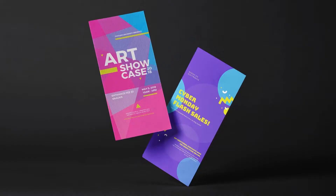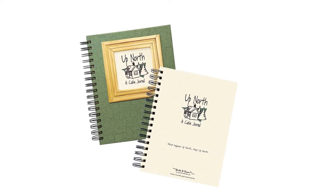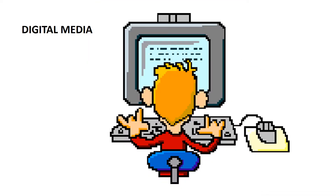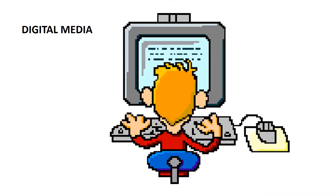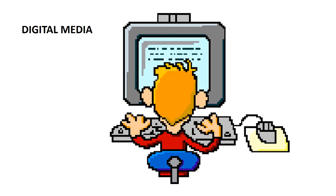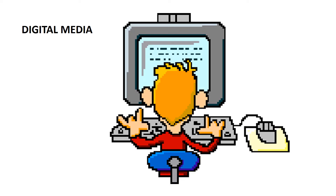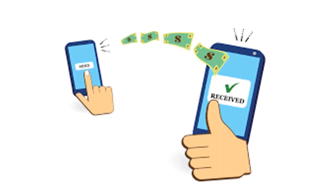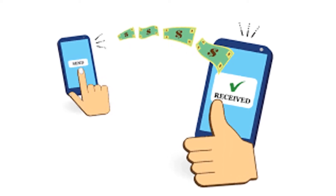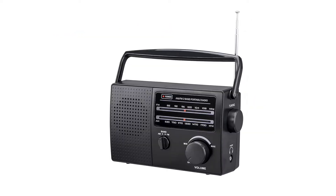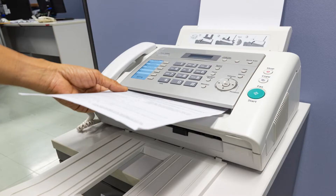books, flyers, journals, etc. Digital media is a form of communication used to spread information on digital electronic devices. It allows us to send and receive information instantly. Examples are television, radio, and fax.